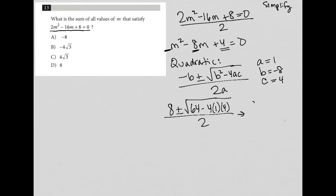So I have 8 plus or minus square root 64 minus 16, because negative 4 times 1 times 4 is minus 16. All over 2.